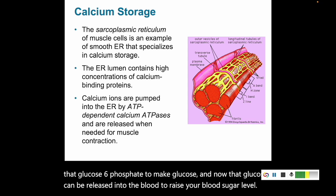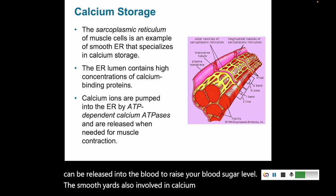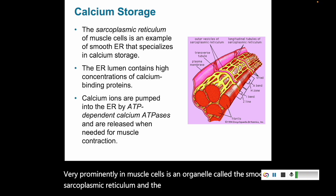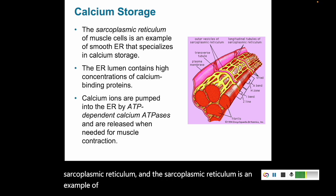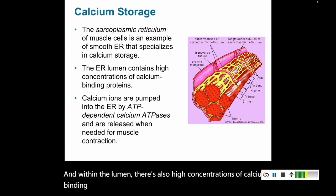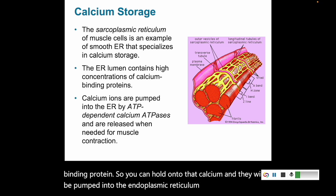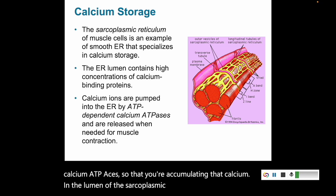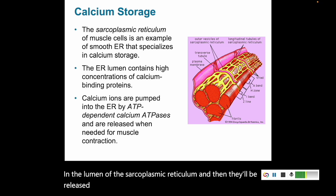The smooth ER is also involved in calcium storage. Very prominently in muscle cells, there is an organelle called the sarcoplasmic reticulum, which is an example of smooth ER. It is really important in storing calcium in muscle cells. Within the ER lumen, there are high concentrations of calcium-binding protein to hold on to that calcium. Calcium is pumped in by ATP-dependent calcium ATPases and accumulated in the lumen, then released when needed for muscle contraction.